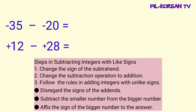Pagkatapos, i-apply na ang rules ng pag-add ng integers na merong magkaibang signs. Sa pag-add naman ng integers na magkaiba yung signs, ang ginagawa ay yung una, i-disregard o hindi na papansinin natin yung signs ng addends.